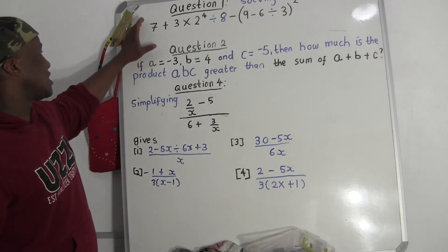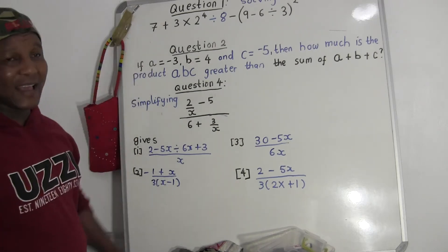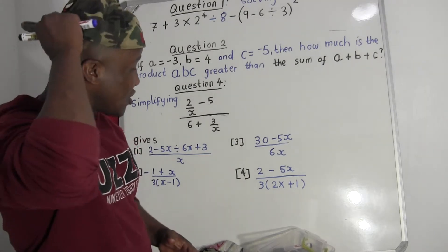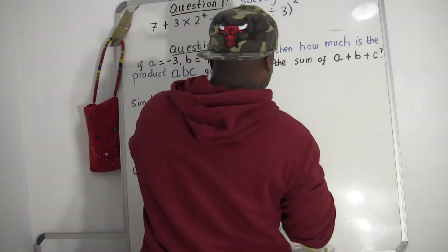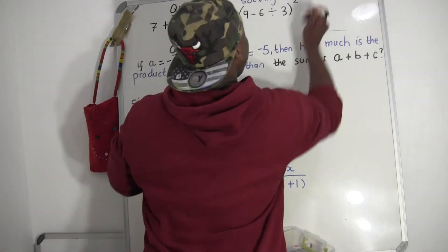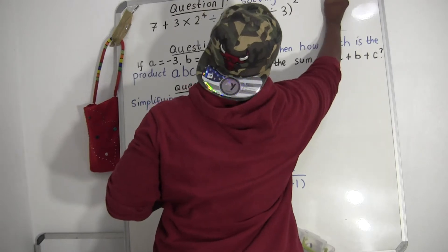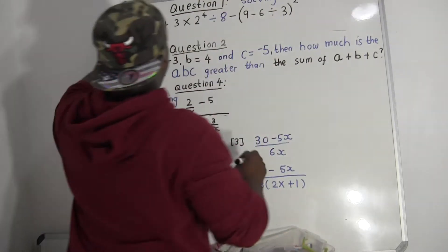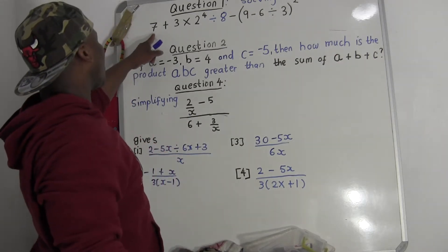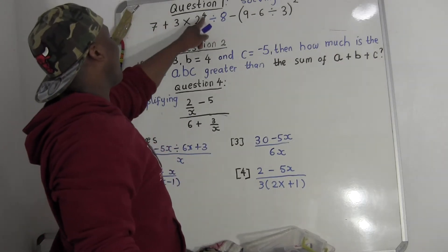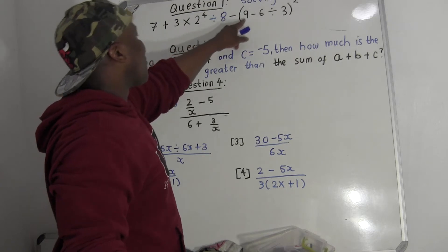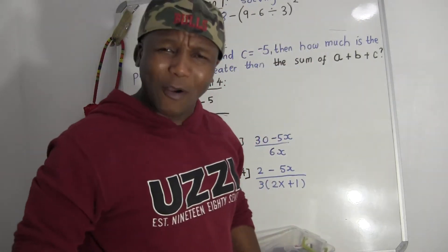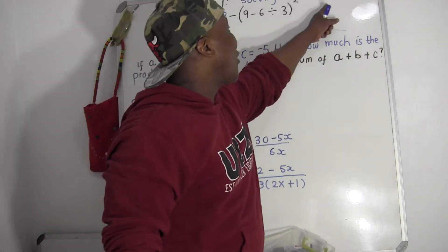They give a question in equation number one — they say simplify. I'm going to show you a very simple trick. This trick is very, very important. It's called BODMAS: Bracket, Order, Division, Multiplication, Addition, Subtraction. So if you have a lot of expressions with numbers — plus, multiplication, power, divide, bracket — you follow this BODMAS trick.